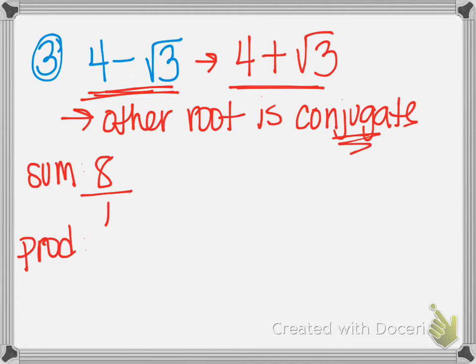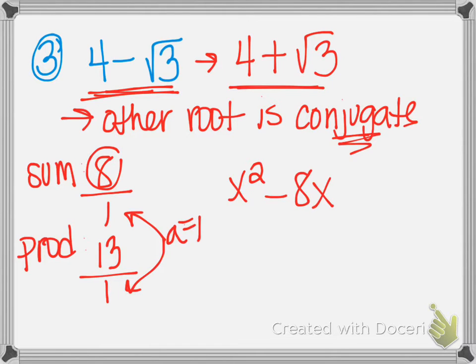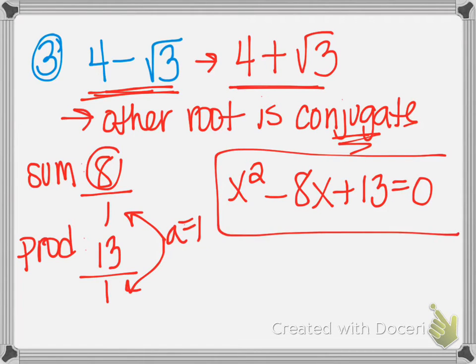My product, if I multiply 4 minus rad 3 and 4 plus rad 3, you can do that by hand or in your calculator, you should get 13. Again, since it's not a fraction, you can technically put it over 1. That's nice because that means that my a is 1 because those are my two denominators. So this equation starts out with plain old x squared. Since my sum is 8, I change my sign to make it negative 8x, and I add my product at the end. Equals 0 again because it's an equation, and that's my final answer.